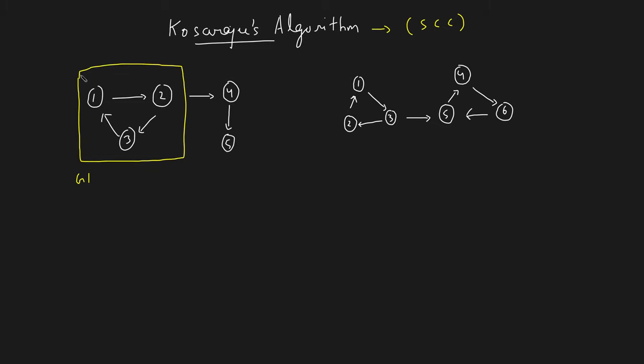Take any node in this component. Starting from node one, you can reach two and three. Starting from two, you can reach three and one. Starting from three, you can reach one and two. So every node is reachable to every other node, making this a strongly connected component.